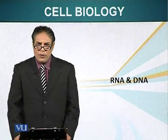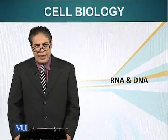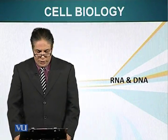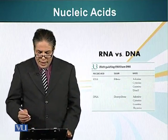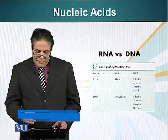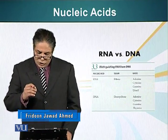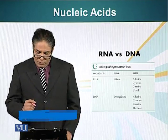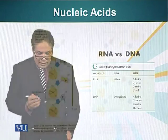In this module, we will look at the differences between RNA and DNA. We will also look at some of the chemical properties of these molecules. First of all, let's look at the differences. As I have mentioned before, RNA has ribose sugar and it has uracil. However, DNA has deoxyribose and thymine instead of uracil.